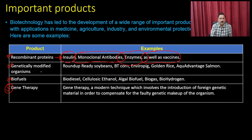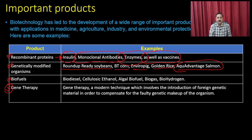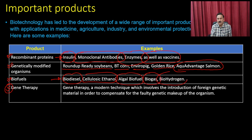We have also developed genetically modified organisms — for example, Roundup Ready soybeans, BT corn, Enviropig, golden rice, and AquAdvantage salmon. These are produced with different features to improve nutritional requirements or disease resistance. We have also utilized biotechnology principles to produce biodiesel, cellulosic ethanol, algal biofuels, biogas, and biohydrogen.